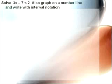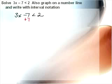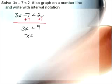The first one we have here is solve 3x minus 7 less than 2. Graph your solution on the number line and write with interval notation. We use our same steps for solving as we do a normal equation even though it's an inequality sign. We're isolating the x on one side, so we add 7 to both sides. That gives us 3x less than 9, and divide both sides by 3, and we get x less than 3.